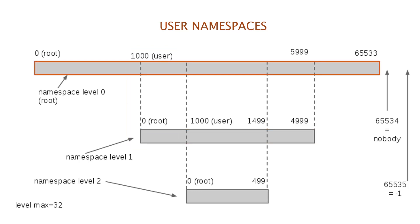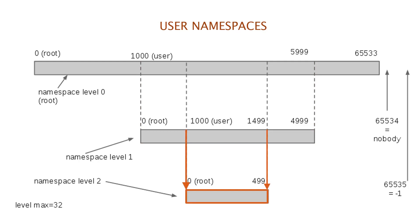In this user namespace hierarchy, the first user namespace, which is the initial user namespace of the host, maps all the user ID range from 0 to 65,533. The user namespace at level 1 maps UID range 1000 to 5999 of the level 0 namespace to the range 0 to 4999 inside it. Similarly, the level 2 namespace maps the UID range 1000 to 1499 of the level 1 namespace to the range 0 to 499 inside it. It can be nested to a maximum of 32 levels.